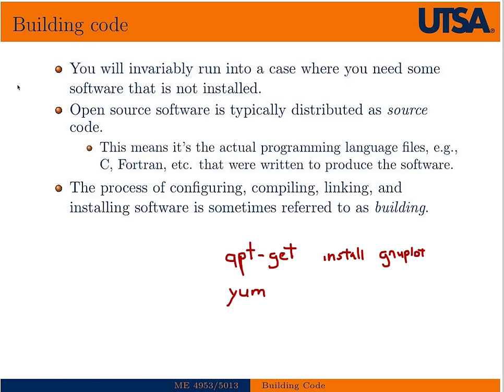This is a good way to get a lot of packages. I would say maybe 75% of all open source software is available through apt-get. But eventually you'll run into a piece of software that's not available that way and you'll have to build it from source code.